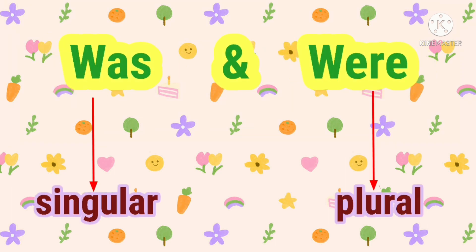Children, do you know was and were both tell us about some past event? Jo beet chuka hai uske baare mein batate hain was and were.